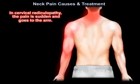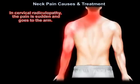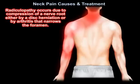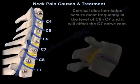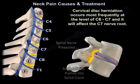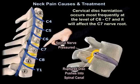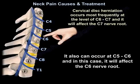In cervical radiculopathy, the pain is sudden and goes to the arm. Radiculopathy occurs due to compression of the nerve root, either by a disc herniation or by arthritis that narrows the foramen. Cervical disc herniation occurs most frequently at the level of C6-C7, and it will affect the C7 nerve root. It can also occur at C5-C6, and in this case it will affect the C6 nerve root.